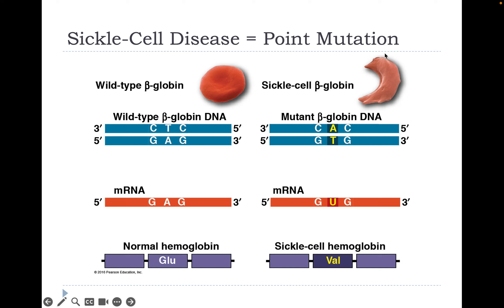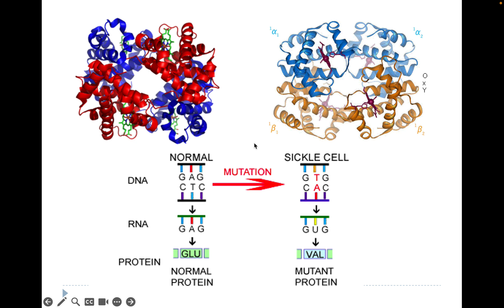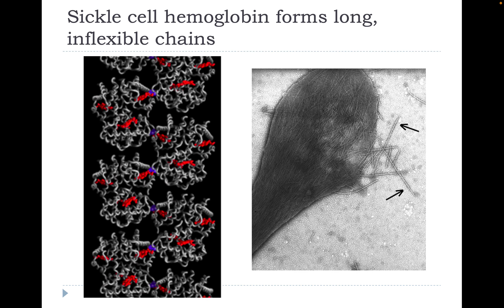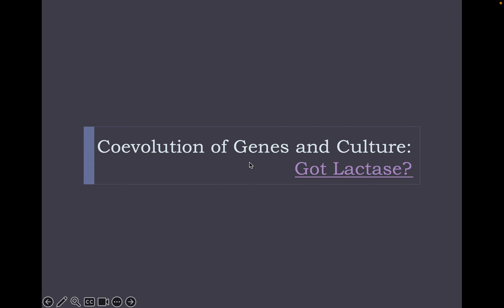Sickle cell hemoglobin forms long inflexible chains, visible under a microscope. Normal red blood cells flow freely through the bloodstream, but sickle cell red blood cells can block up because of their shape.